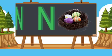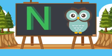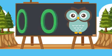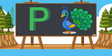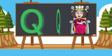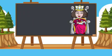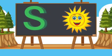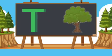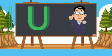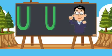N for nest, O for owl, P for peacock, Q for queen, R for rat, S for sun, T for tree, U for uncle.